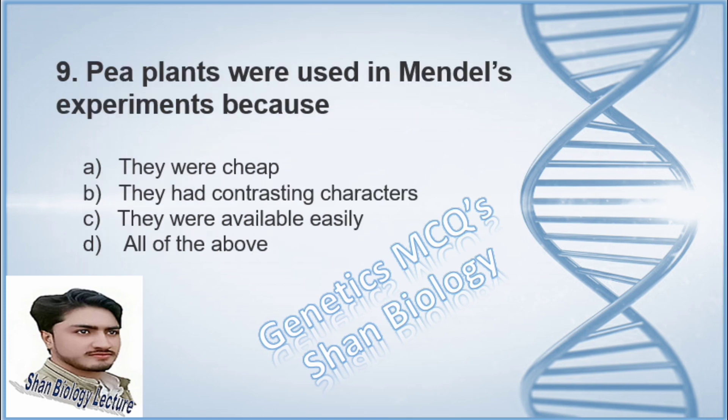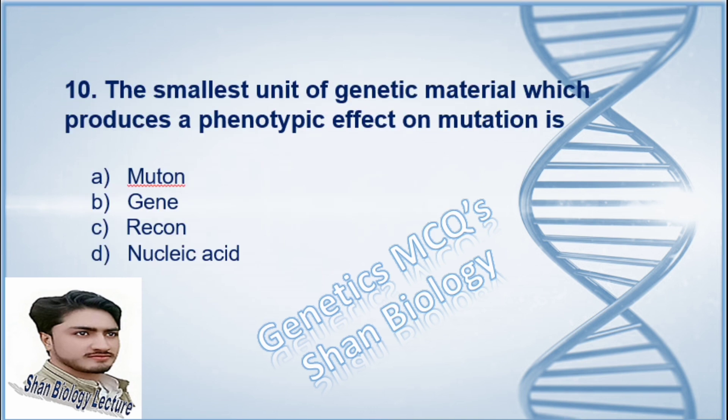Question 8: An exception to Mendel's law is — option A independent assortment, option B linkage, option C dominance, option D purity of gametes. The correct option is B, linkage. Question 9: Pea plants were used in Mendel's experiments because — option A they were cheap, option B they had contrasting characters, option C they were available easily, option D all of the above. The correct option is B, they had contrasting characters.